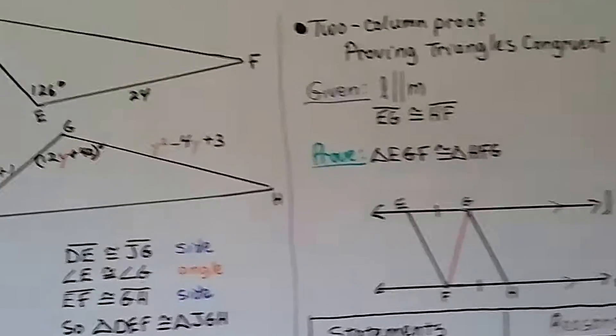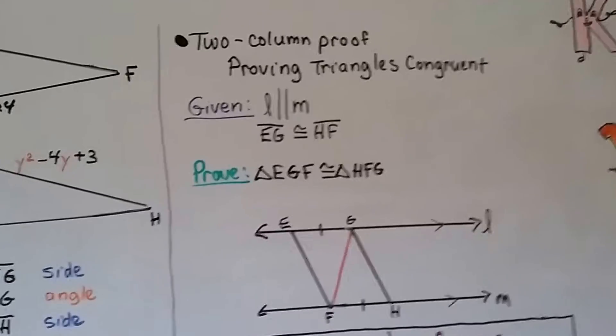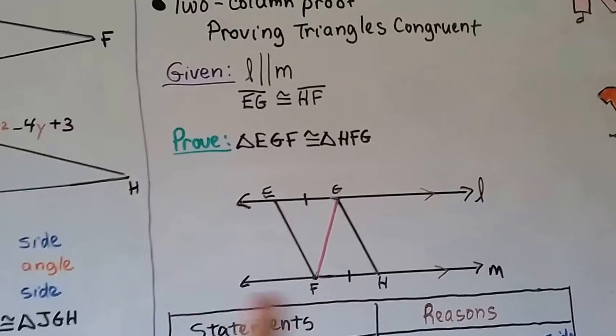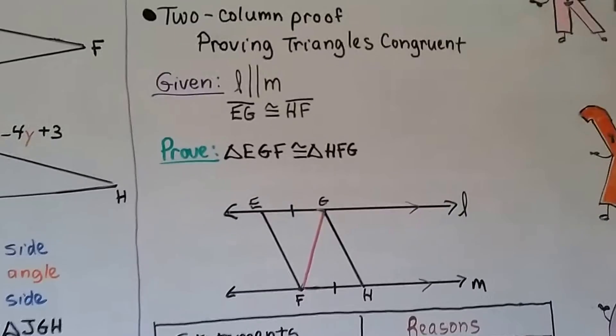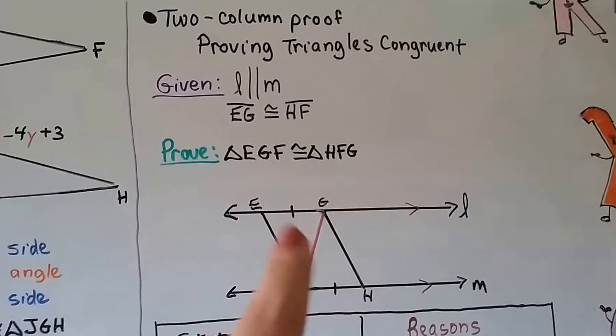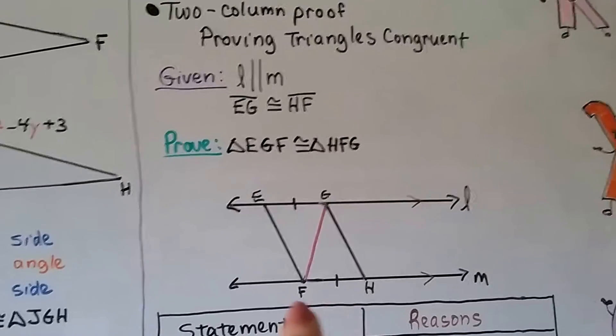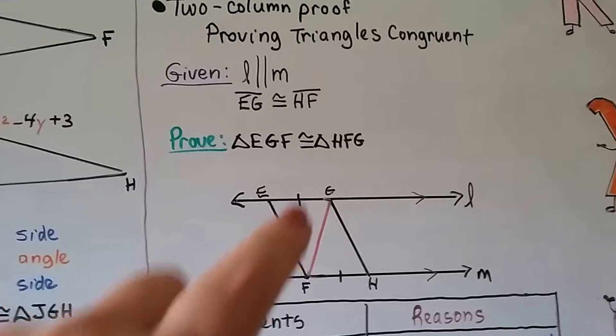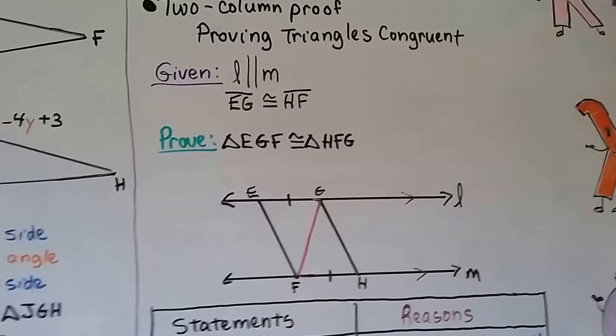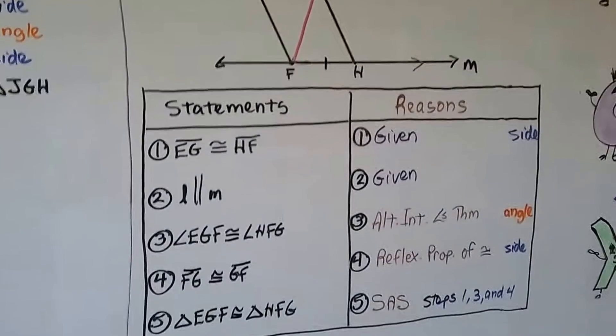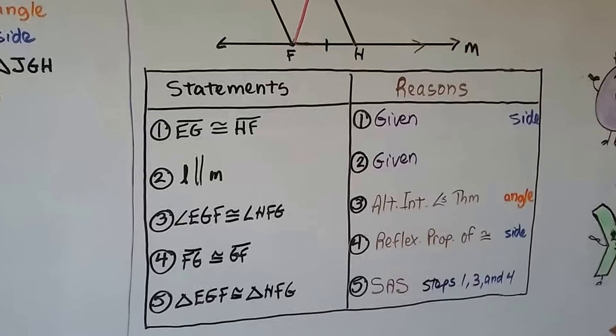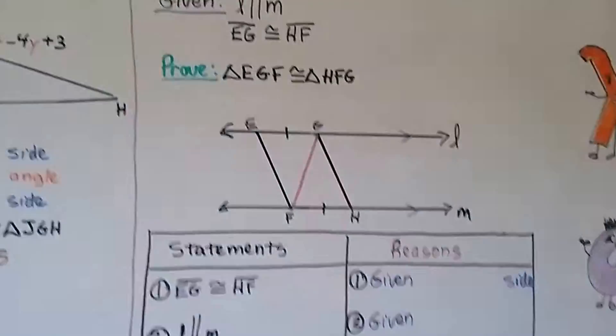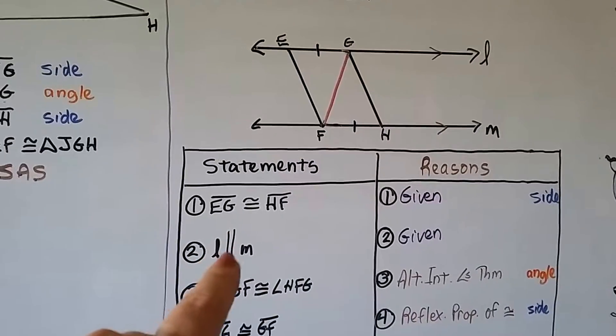I got a short two column proof for you proving triangles congruent. We're given that L is parallel to M - we've got L and M and we see our parallel marks. We're also given that segment EG is congruent to segment HF. We need to prove that triangle EGF is congruent to triangle HFG. We make our statement and reasons columns. First statement is that segment EG is congruent to segment HF - that was given. We also state for number two that L is parallel to M, that was given.